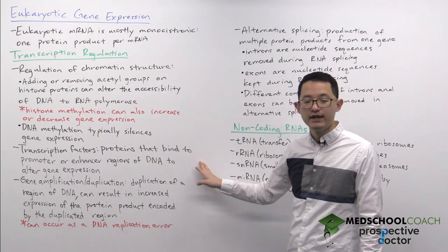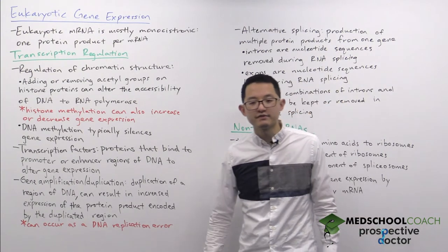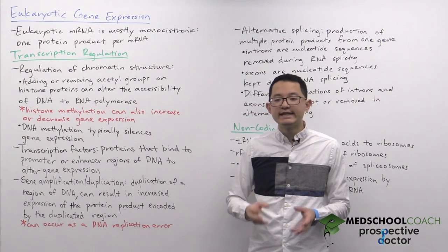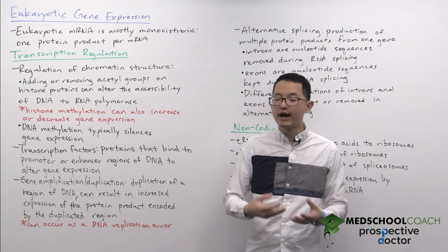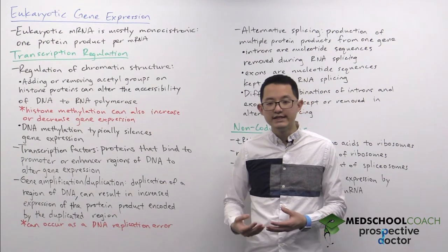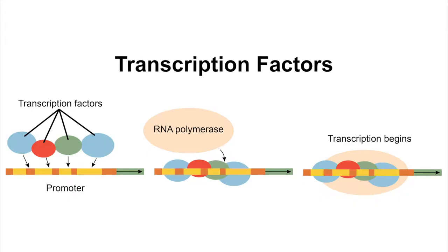Another method of altering gene transcription levels is through the use of transcription factors. Transcription factors are proteins that can bind to DNA sequences called promoters or enhancer regions, and when they bind to DNA, they can either increase or decrease gene expression. In this diagram, you can see how upon the binding of transcription factors to the promoter region of a gene, it increases the affinity of RNA polymerase for that promoter, resulting in increased transcription of that gene.